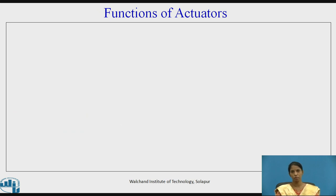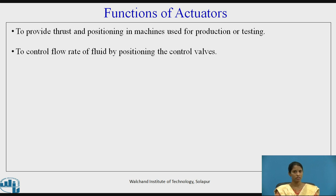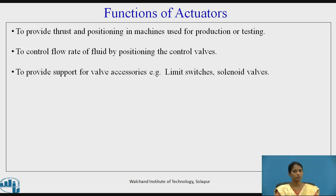Before going into detail, let's see the functions of actuators. The first function is to provide thrust and positioning in machines used for production or testing. The second is to control the flow rate of a fluid by positioning the control valves. The third function is to provide support for valve accessories, for example limit switches or solenoid valves.